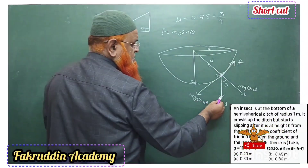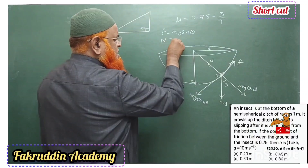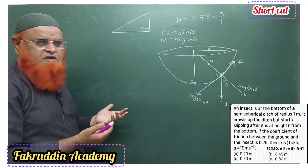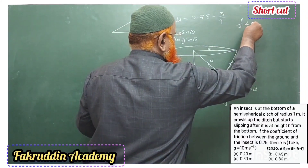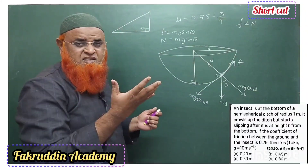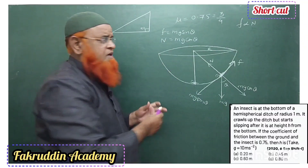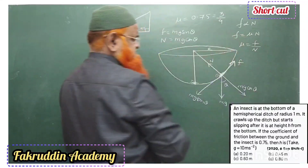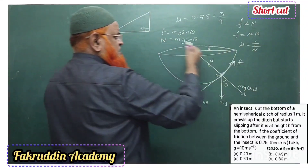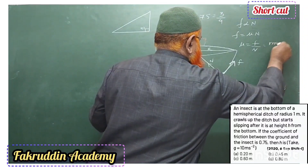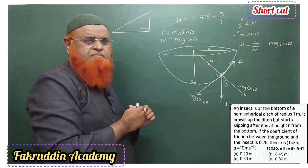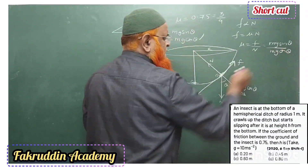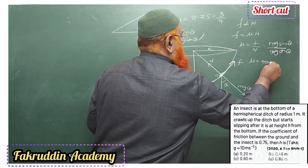Friction f and mg sinθ counterbalance each other. Normal reaction N counterbalances mg cosθ. Since friction is proportional to normal reaction, we write f = μN, so μ = f/N. Substituting f = mg sinθ and N = mg cosθ, mg cancels and we get μ = tanθ.